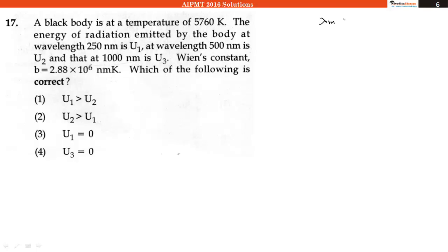Lambda M into T is equal to constant, and that constant is known as Wien's Displacement Law constant. And Lambda M is the wavelength of maximum intensity. Lambda M will be equal to small b upon capital T.